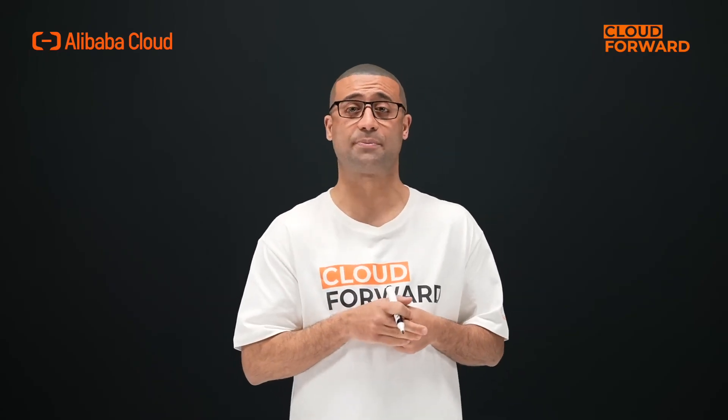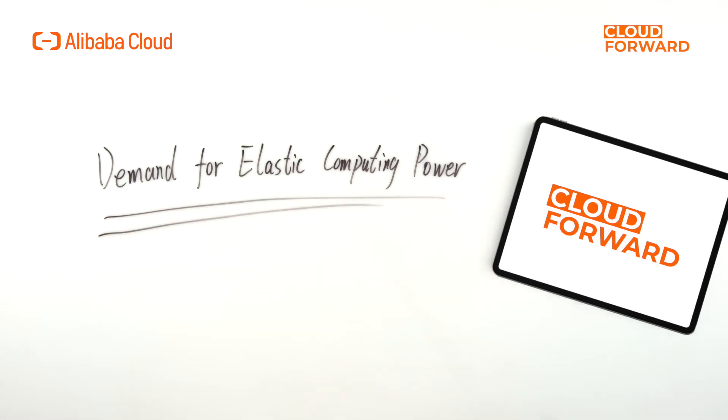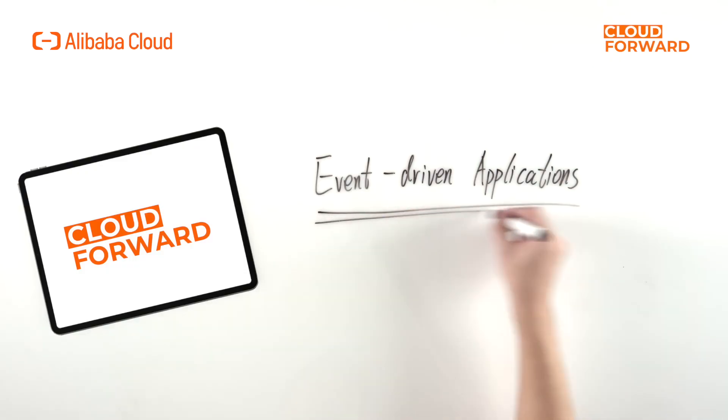What are the scenarios that Function Compute is suitable for? There are mainly three types. One: web applications which support various programming languages, new programs using serverless frameworks, or existing applications — for example, web APIs. Two: applications with strong demand for elastic computing power, such as AI inference, audio and video processing, etc. Three: event-driven applications, such as scenarios driven by other Alibaba Cloud products, webhooks, scheduled tasks, etc.